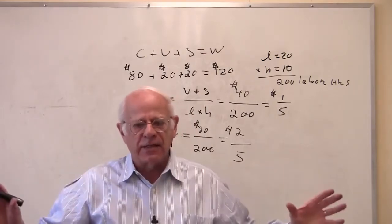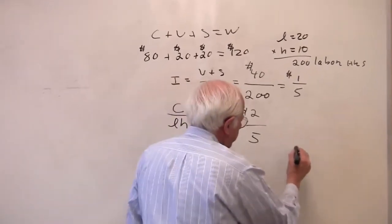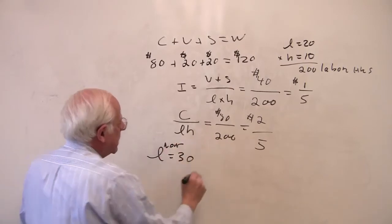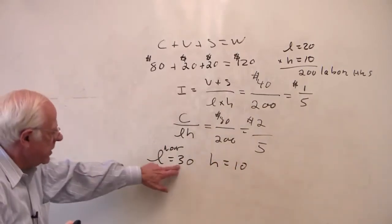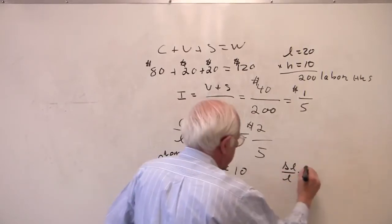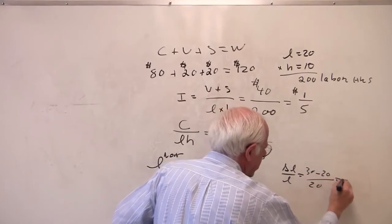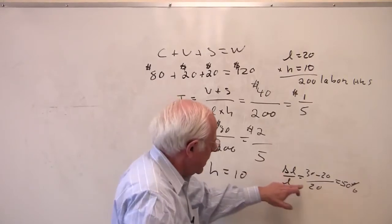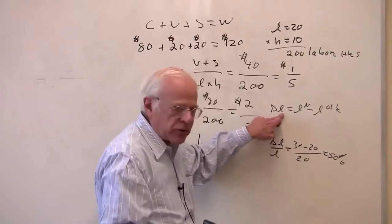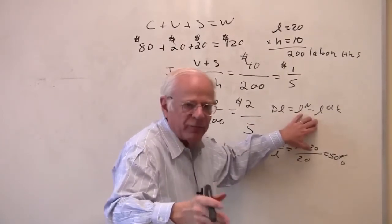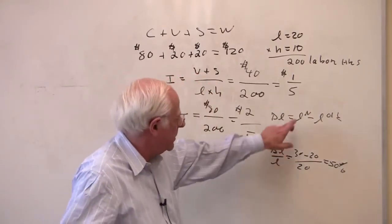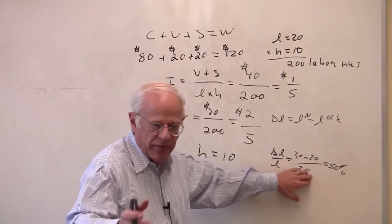Now let's assume everything stays the same save for one change: employment grows from 20 to 30 workers — an increase of 50%, since (30 minus 20) over 20 equals 50%. So delta L, the change in employment of productive labor, represents the new minus the old. The capitalists go out and expand employment, hiring 30 rather than 20 workers — a hefty 50% rate of increase.